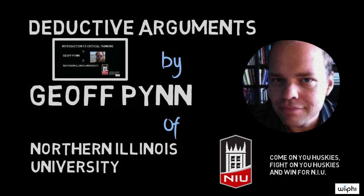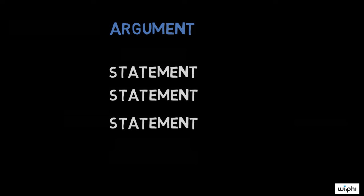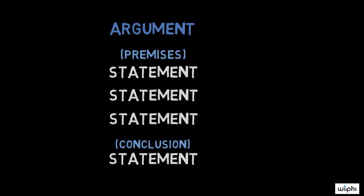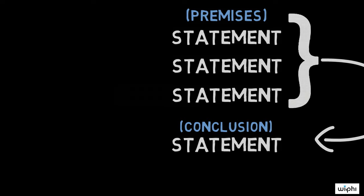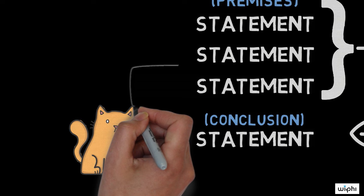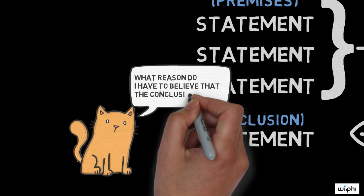An argument is a set of statements, called its premises, that are meant to give you a reason to believe some further statement, called the argument's conclusion. In some arguments, the premises are meant to guarantee that the conclusion is true. Arguments like this are called deductive arguments. A good deductive argument can give you a very good reason for believing its conclusion, but not all deductive arguments are good, and so there are several things to think about when deciding whether to believe the conclusion of a deductive argument.